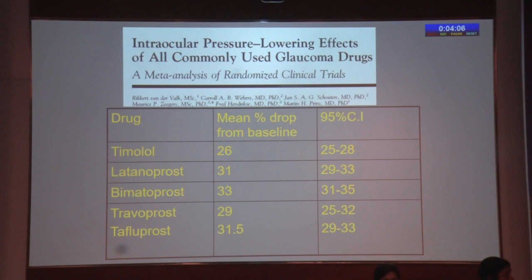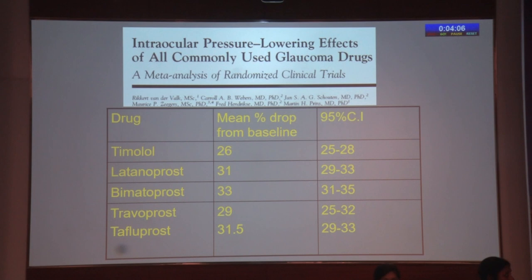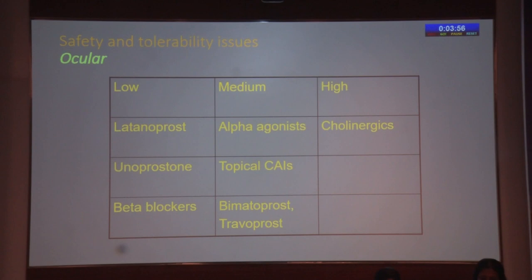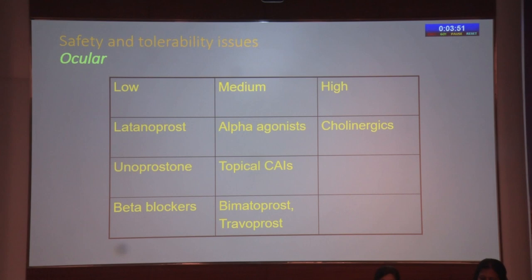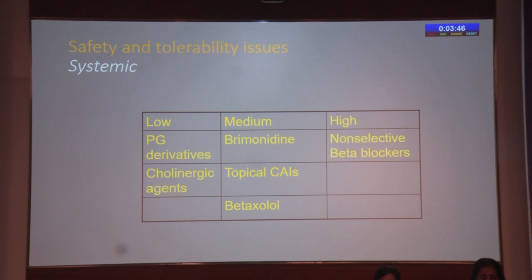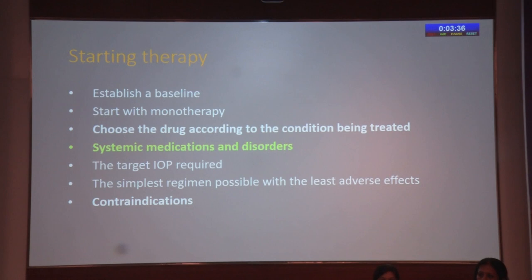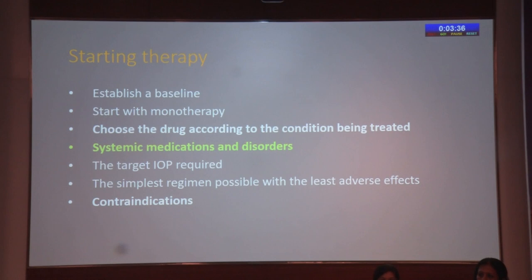A drop of between 15% to 23% is seen with these drugs. Timolol comes in the middle, and the PG analogs give the best drop in IOP. For diurnal control of IOP, the PG analogs score over other drugs, with beta blockers coming in between. On safety issues — both ocular safety and systemic tolerability — the PG analogs also score well, though some conjunctival hyperemia does occur. When starting therapy: establish a baseline, start with monotherapy, choose the drug according to the condition being treated, remember systemic medications and disorders, the target IOP required, the simplest regimen possible with the least adverse effects, and remember the contraindications.